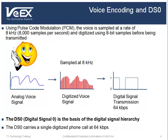Once it has been converted into a digital signal, the voice stream is transmitted at a rate of 64 kbps, which is also called the DS0 rate. DS0, or digital signal zero, is the basis of the digital signal hierarchy, where the individual DS0s are multiplexed to form higher capacity circuits. The DS0 carries a single digitized phone call at 64 kbps.